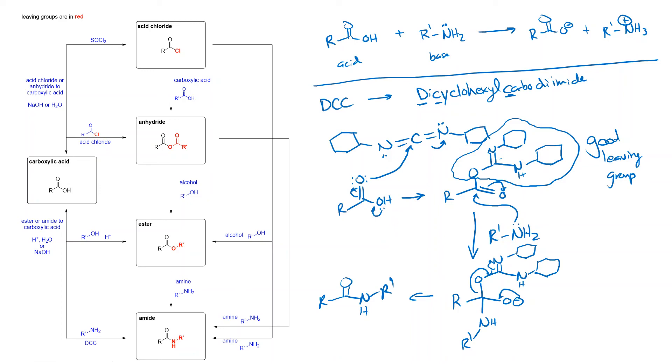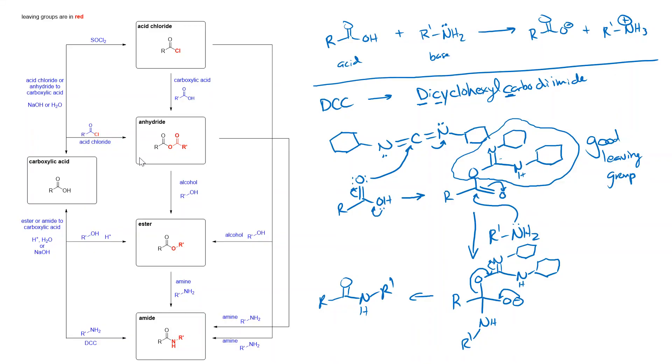If you do this reaction without DCC, it will be counted wrong. If you just add an amine and a carboxylic acid together, you're going to do this acid-base reaction that we have at the top. You need to have DCC in there because you need to have a good leaving group and you need to have the nitrogen able to attack the carbonyl and then lose the leaving group to get to the final product.